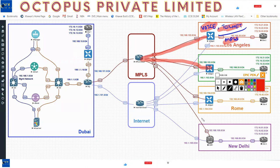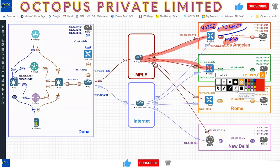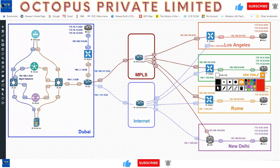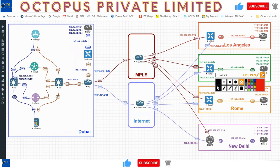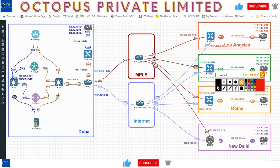When the vEdge comes up it needs to register to vBond. At the time of registration it provides both its public and private IP addresses. So vBond knows both IPs and tells vManage and vSmart. Even if the IP address changes, as soon as the WAN edge comes up it goes back to vBond, re-authenticates, and vBond again tells vManage and vSmart the updated public and private IPs. It's a fantastic product.